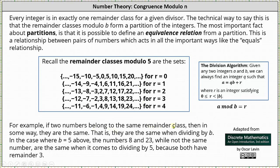If two numbers belong to the same remainder class then in some way they are the same. That is, they are the same when dividing by b. In the case where b equals five, the numbers eight and 23, while not the same number, are the same when it comes to dividing by five because both have remainder three. Notice both eight and 23 are in the remainder class for r equals three.